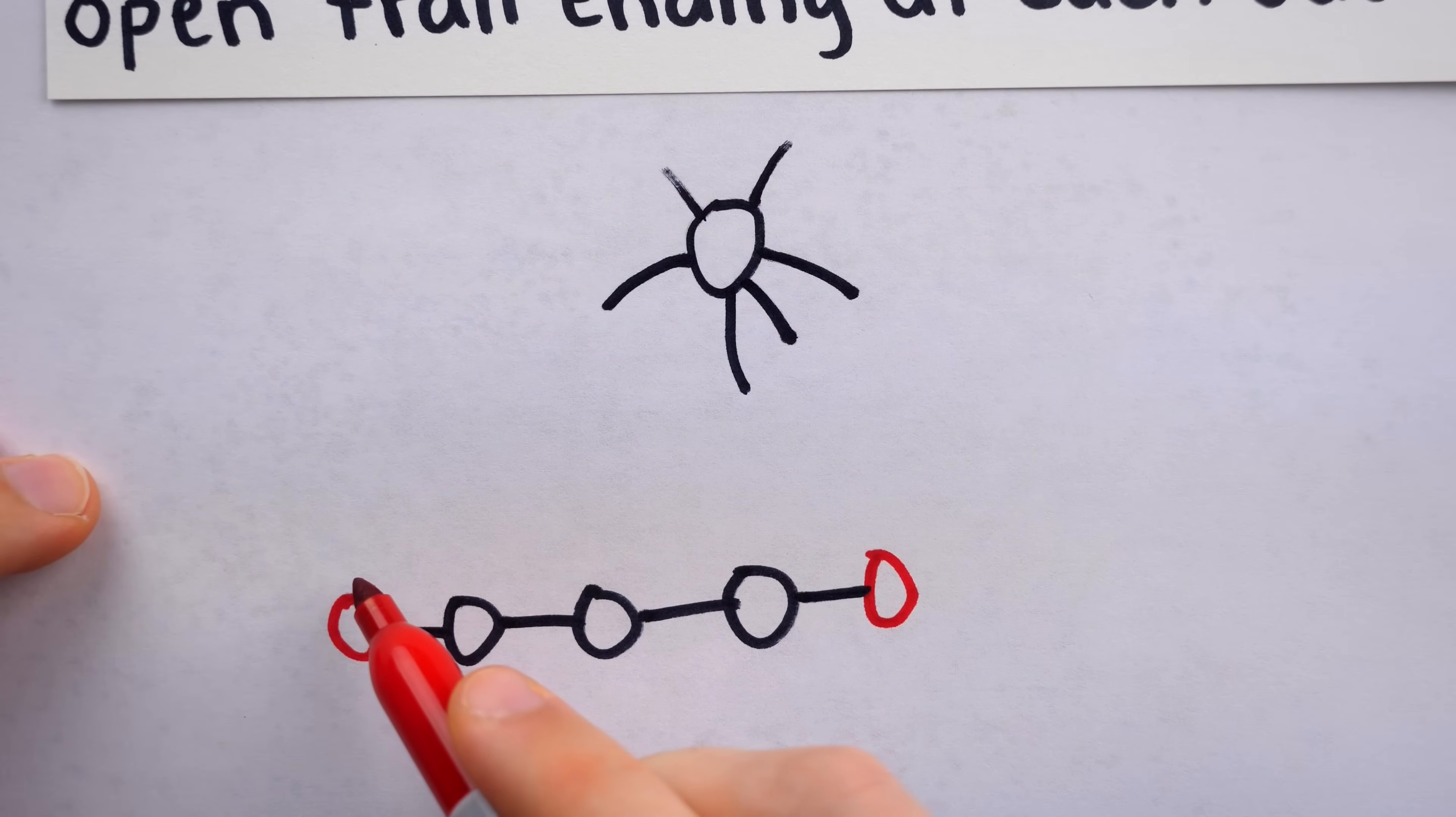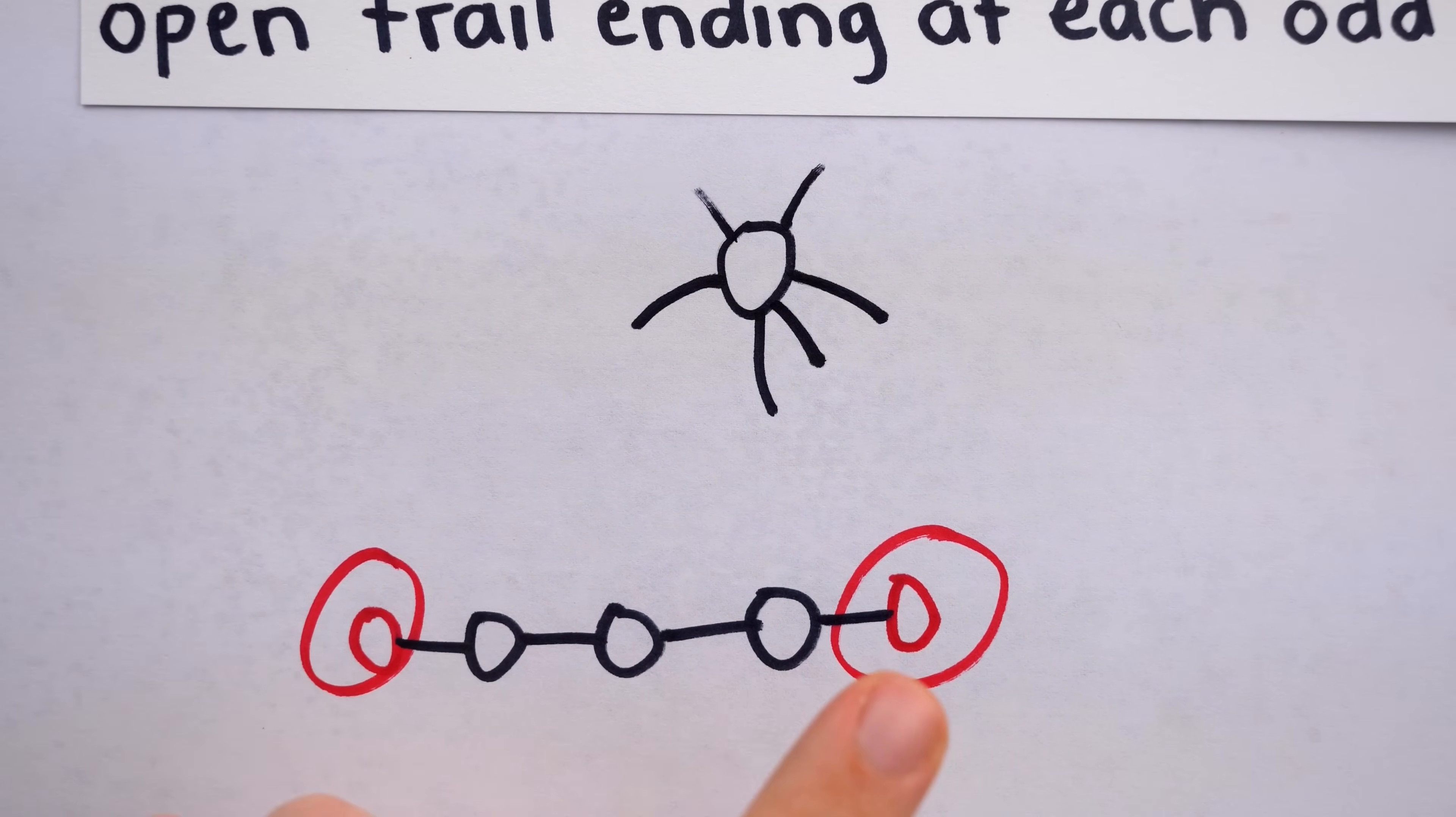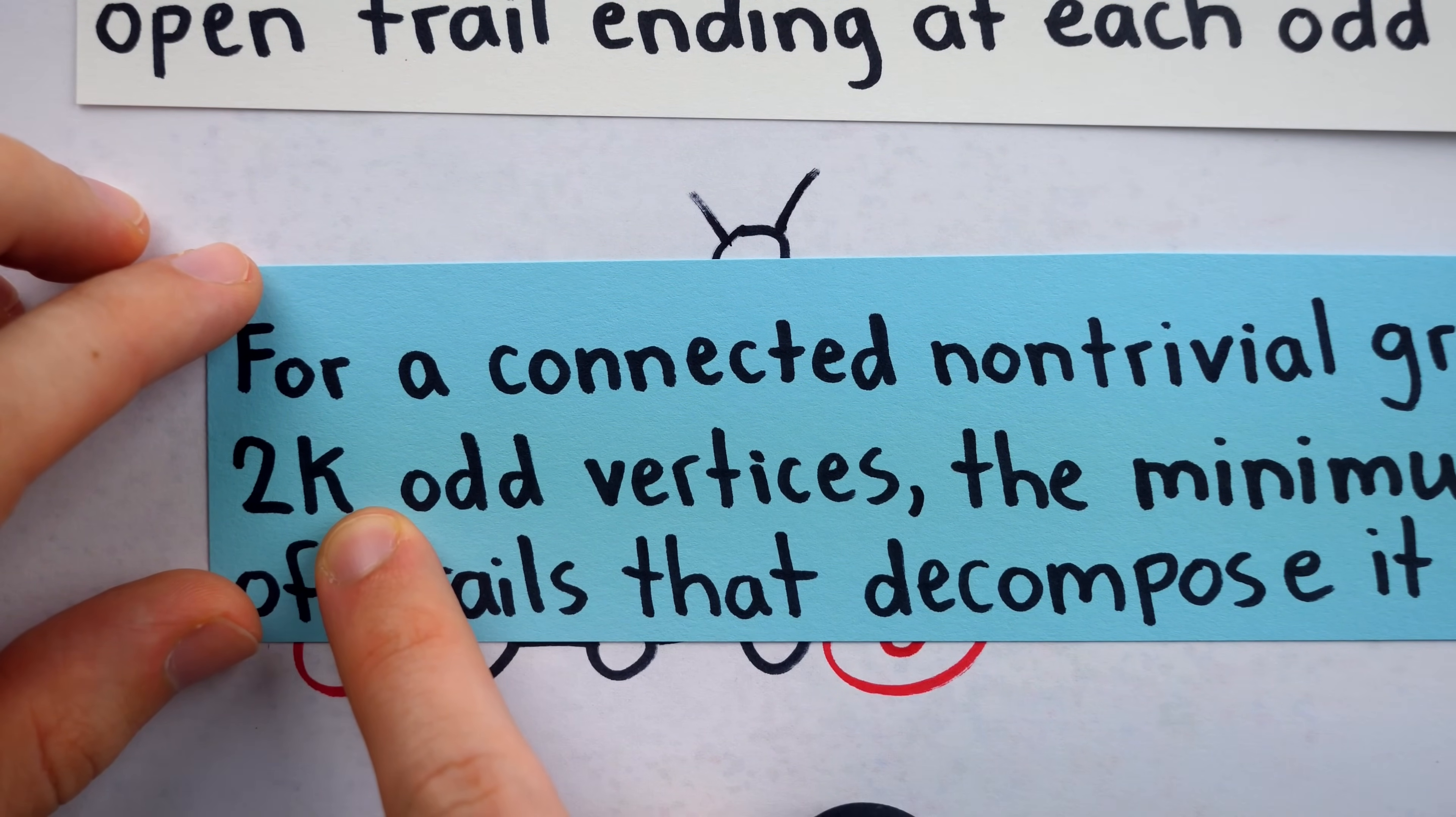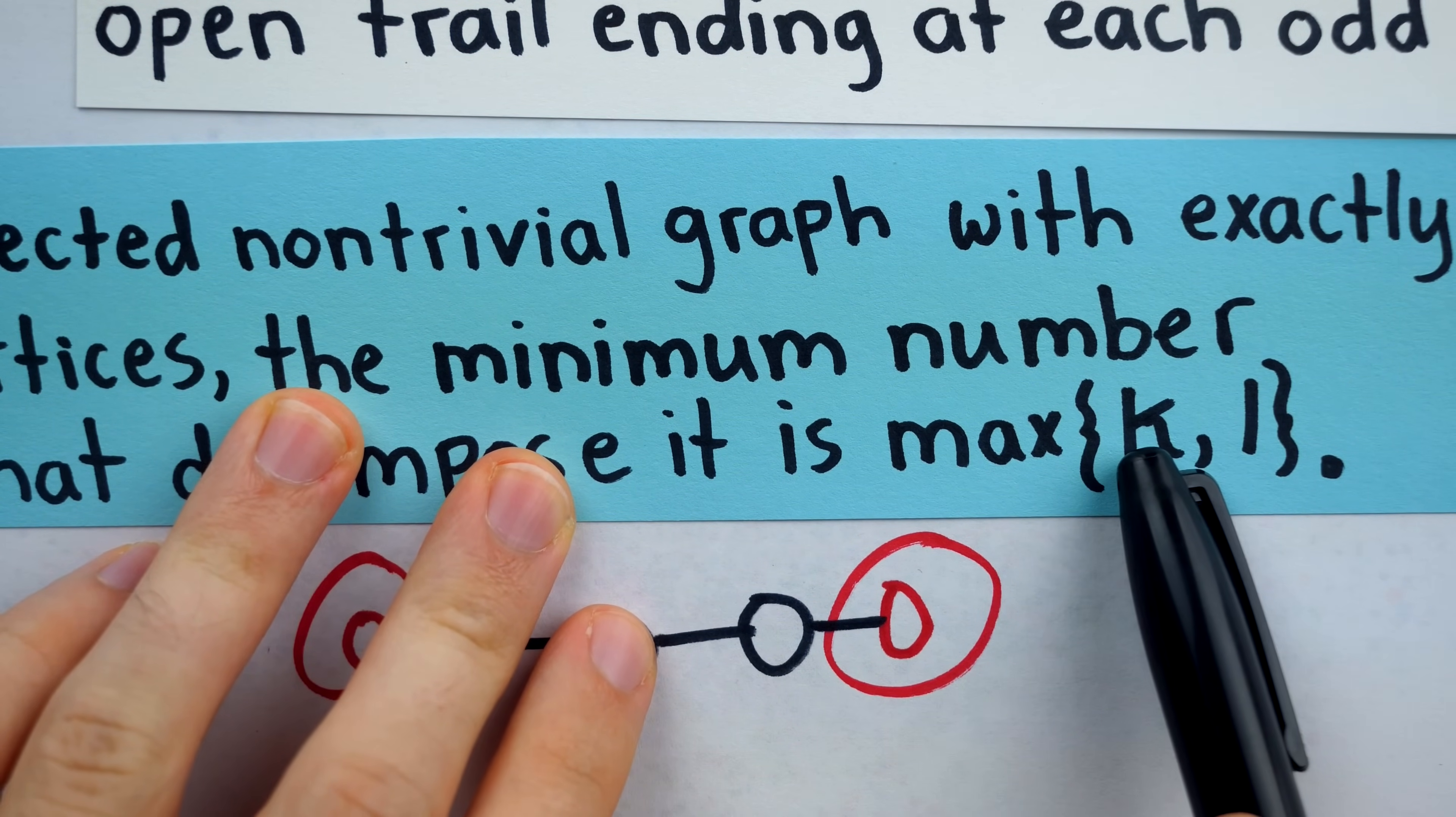Of course, each open trail has exactly two end vertices. So, since every odd vertex must occur at the ending of a trail, and every trail has two endings, to get 2k odd vertices, we're going to need at least k trails. And this establishes the necessity of our claim that we will need k trails to decompose the graph.